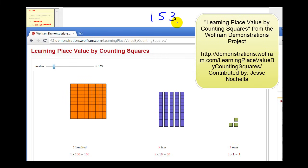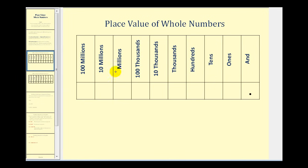Now let's take a look at a more comprehensive place value chart. As we work our way from left to right using place value, we have the ones, tens, hundreds, thousands, ten thousands, hundred thousands, millions, ten millions, hundred millions, and so on. One more thing: when writing large numbers, we separate the millions and the thousands with a comma, and the thousands and hundreds with a comma, to help keep the digits organized.